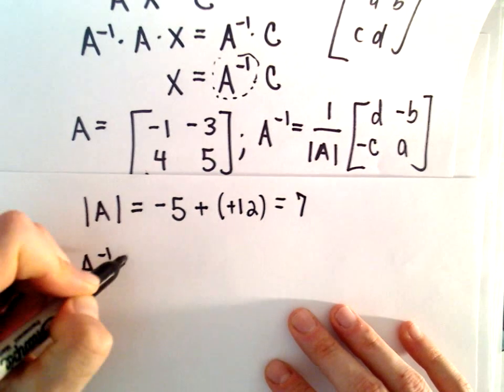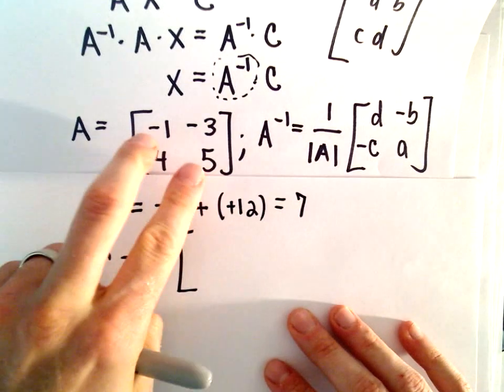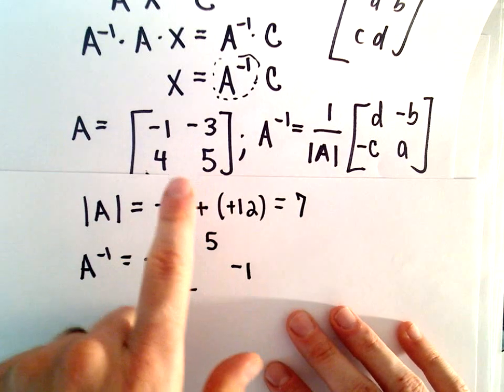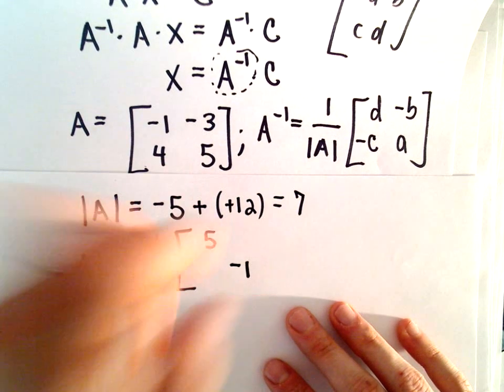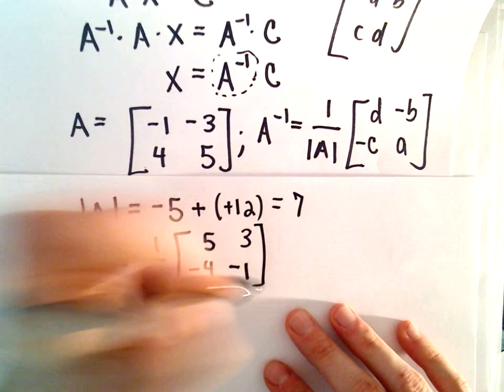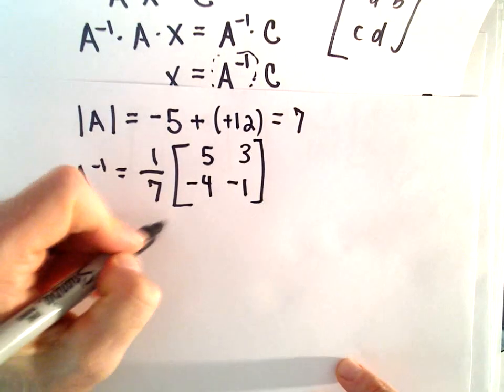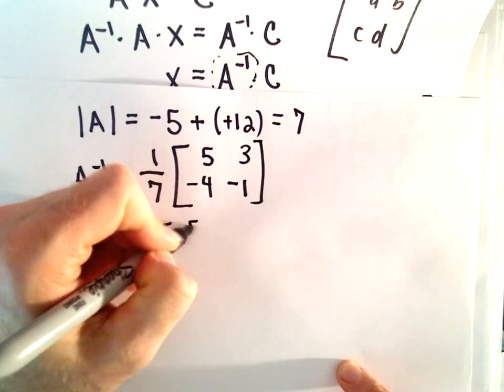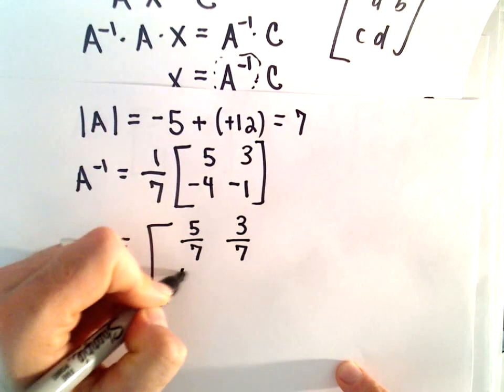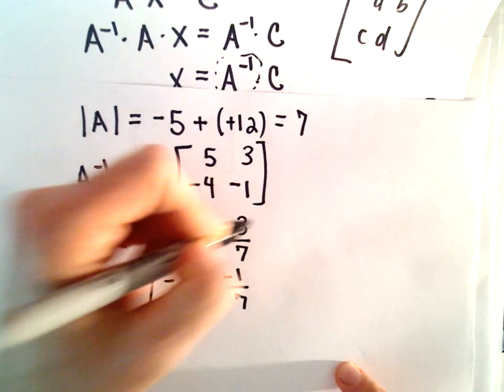So to get A inverse, we'll take 1 over 7. Let's switch the negative 1 and 5, and then we have to change the sign on our other two entries. So we'll have a positive 3 and a negative 4. And if we multiply by 1 over 7, we'll simply have 5 over 7, 3 over 7, negative 4 over 7, and negative 1 over 7.